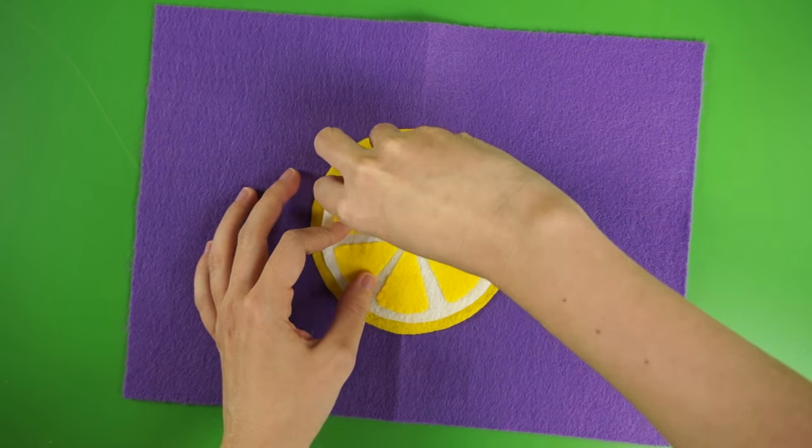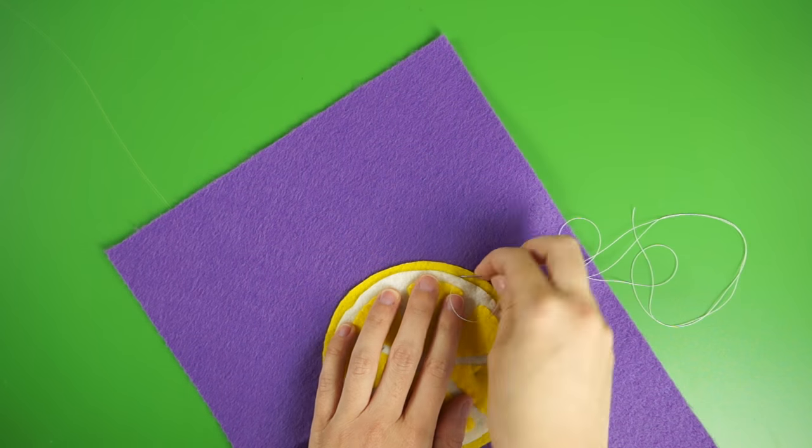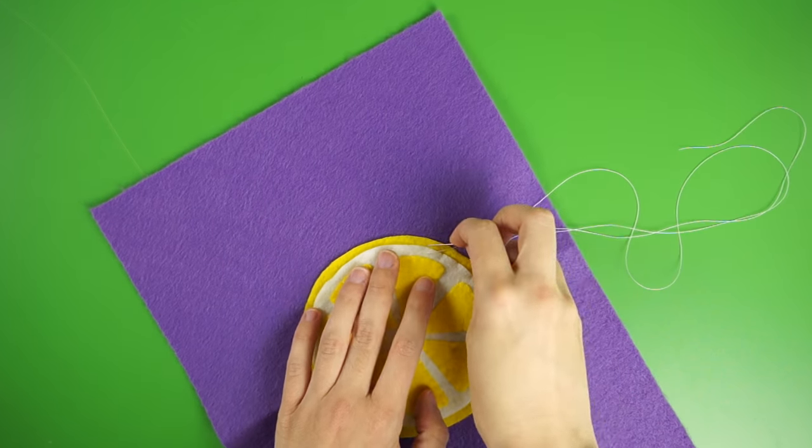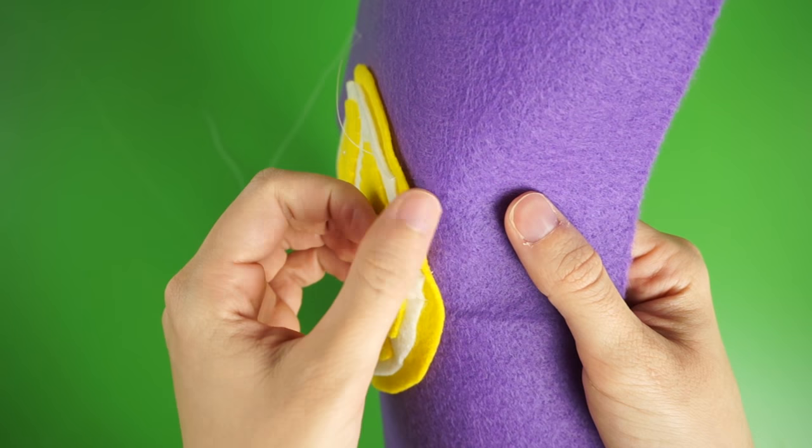If you're gluing, glue the white piece to the biggest circle, then glue the whole thing to the cover of your wallet. But if you're sewing, you can pin the whole stack to the cover and sew through all of the layers like I am, attaching them all in one step.